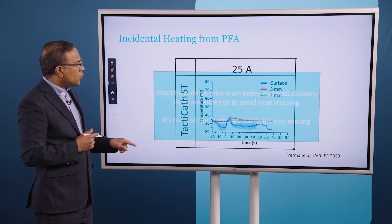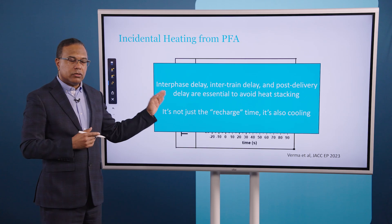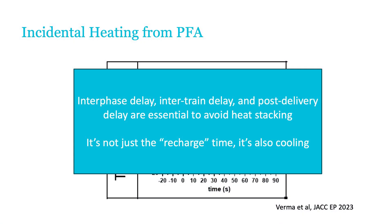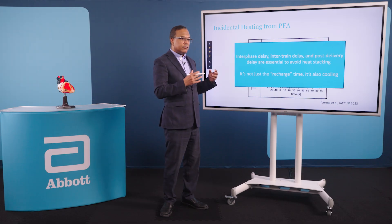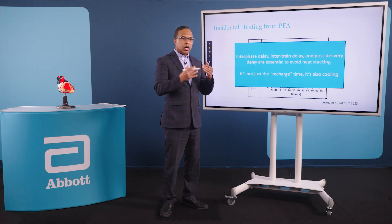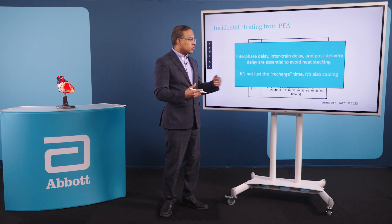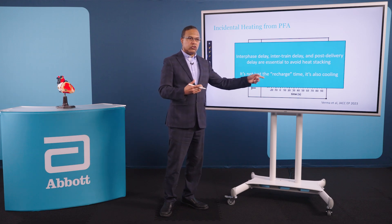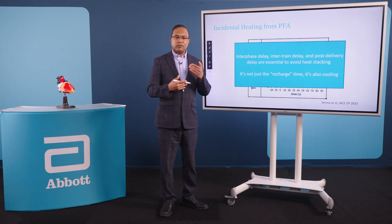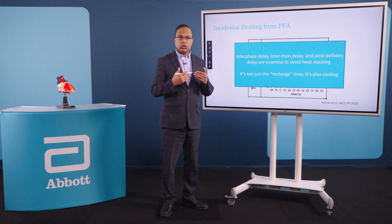That's why important pulse parameters like interphase delay, inter-train delay, and post-delivery delays are essential to avoid heat stacking. When your PFA system locks out for a short period after delivery, it's not just recharging — it's also giving the tissue time to cool in order to avoid heat stacking.